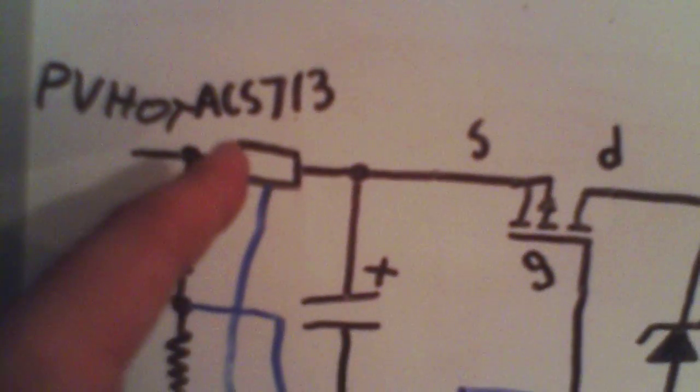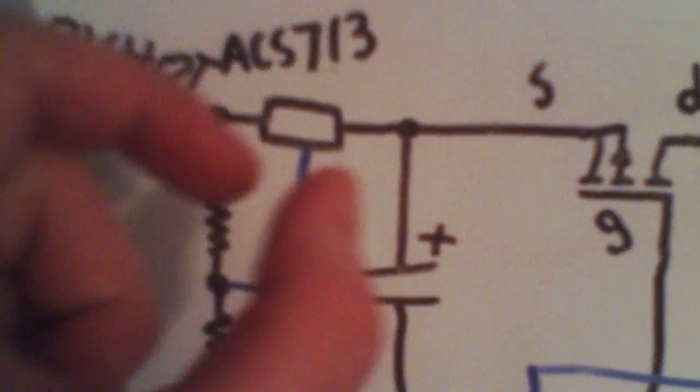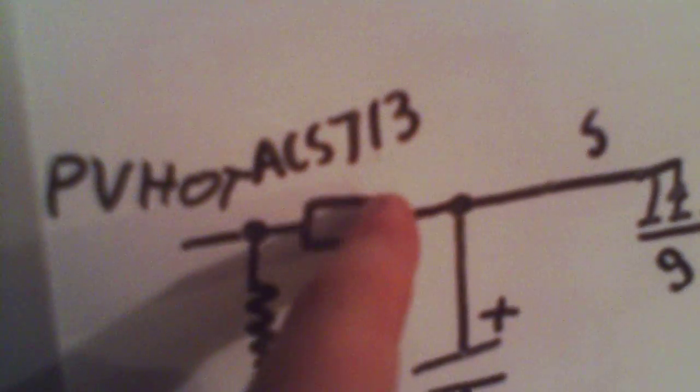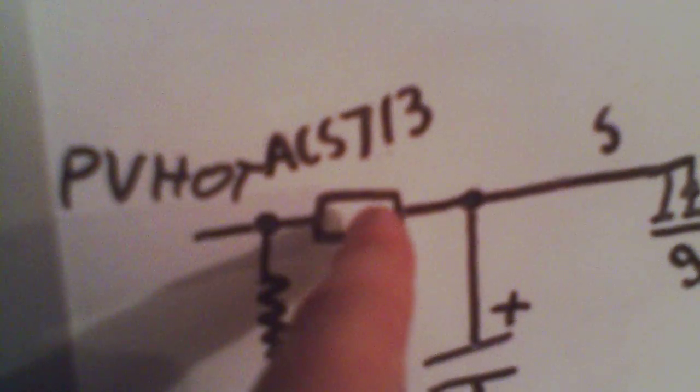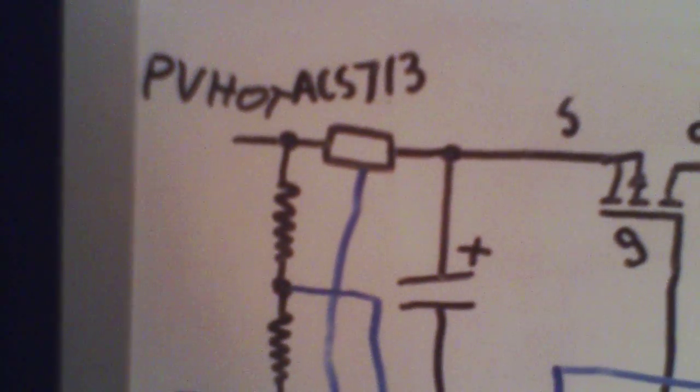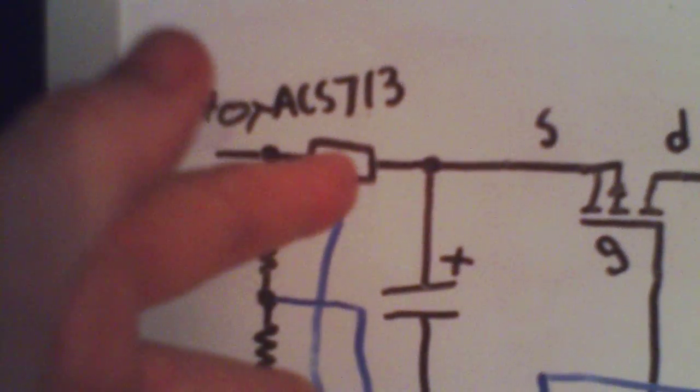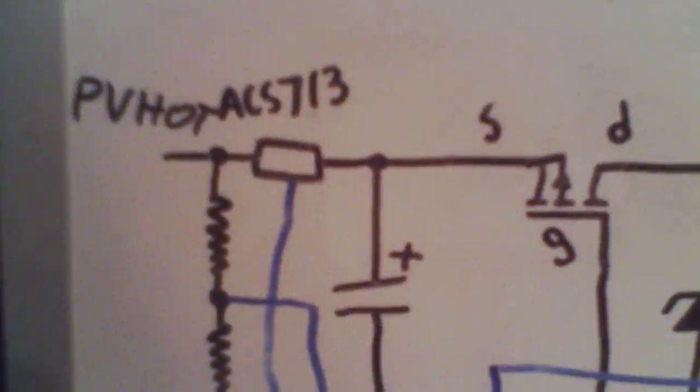Then there's a little ACS-713. And I mean little because it's a tiny SOIC-8 surface mount device. A little ACS-713 Hall effect current sensor which allows for galvanically isolated current sensing. Which is important for this because...